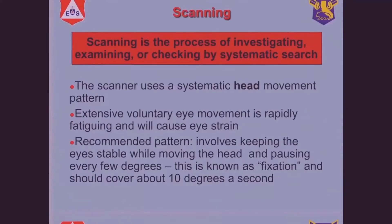Scanning is a process of investigating, examining, or checking by systematic search. We use a combination — they talk about systematic head movement, but it's not in the standard CAP references for scanning. In fact, as you scan, it's a combination of head movement and eye movement. What you want to do is look at a point, fixate on it for a fraction of a second, and then move your eyes and your head to another point, fixate it, and so forth. You don't want your eyeballs constantly moving because the part of your eye that detects with the best visual acuity is the central part — the fovea — and that part does not respond well to motion.